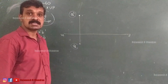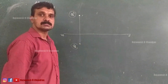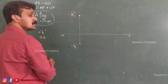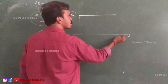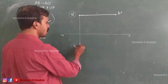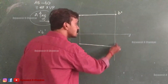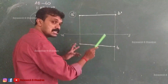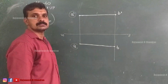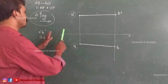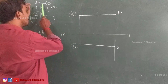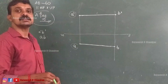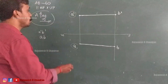From A dash, draw a line 60 mm parallel to XY to locate B dash. Similarly, from A at a distance of 60 mm parallel to XY, locate B. Both A dash B dash and AB should be 60 mm and parallel to the XY line — that is our condition when a line is parallel to both HP and VP. Locate A dash and A, then draw both projections of 60 mm parallel to XY. This completes the construction.